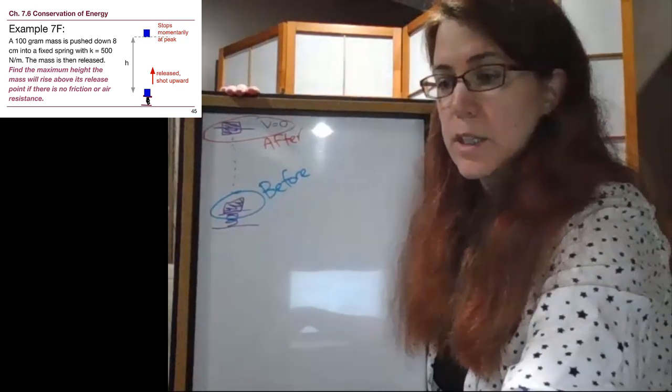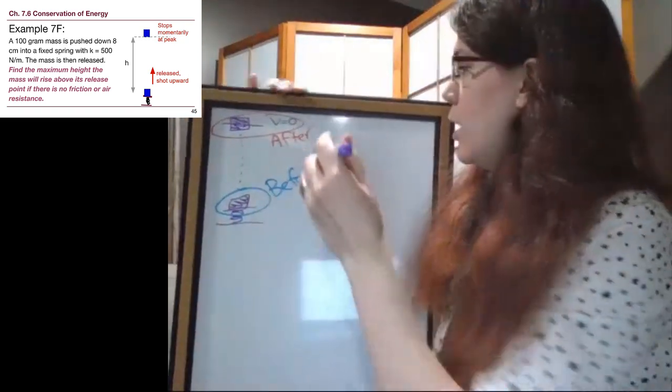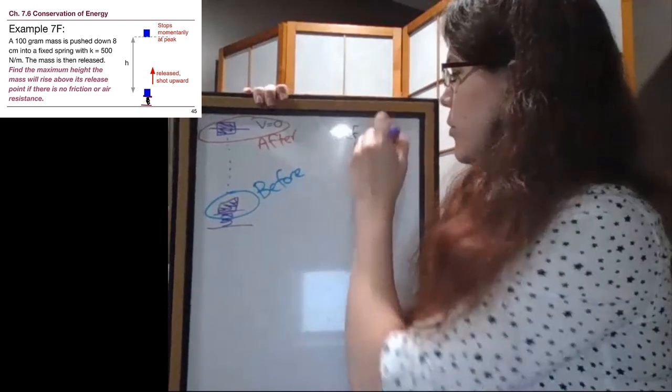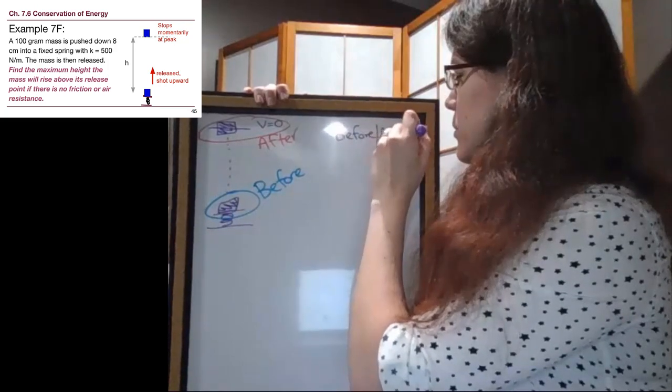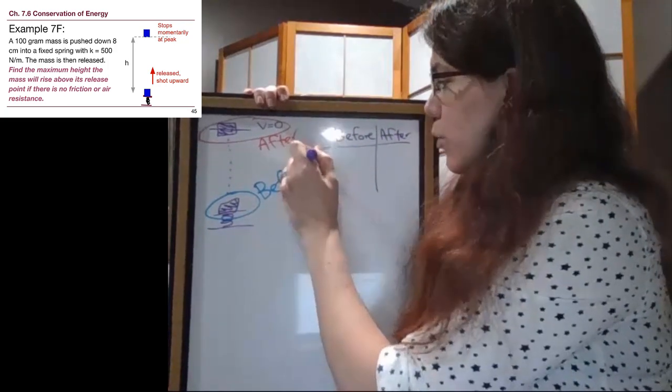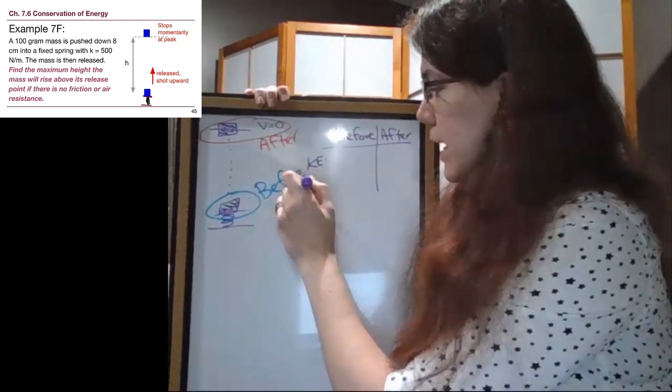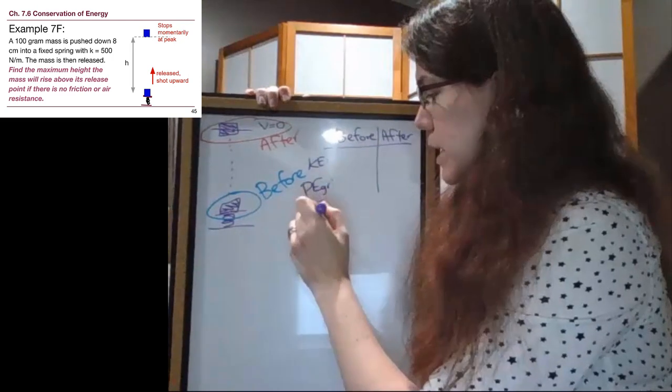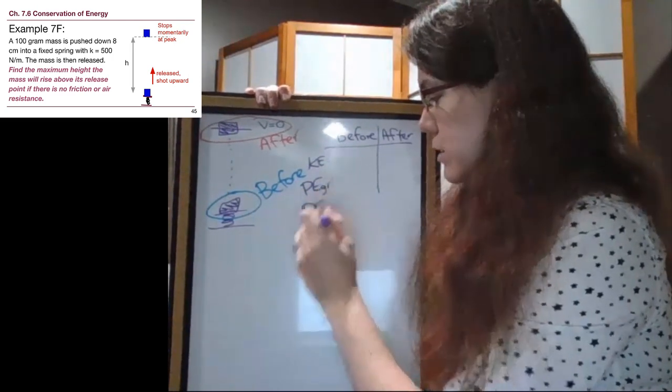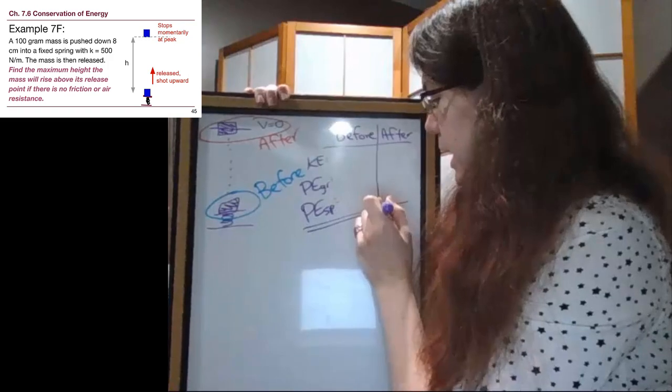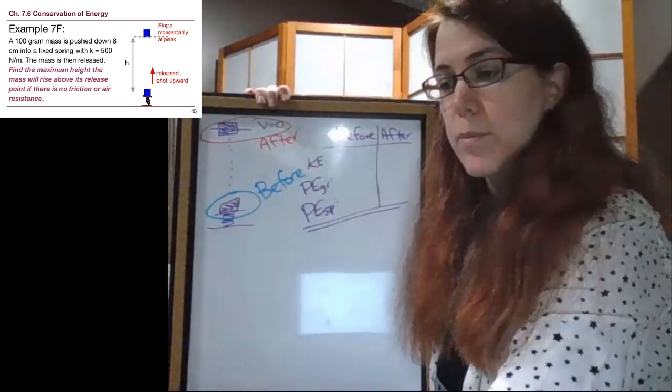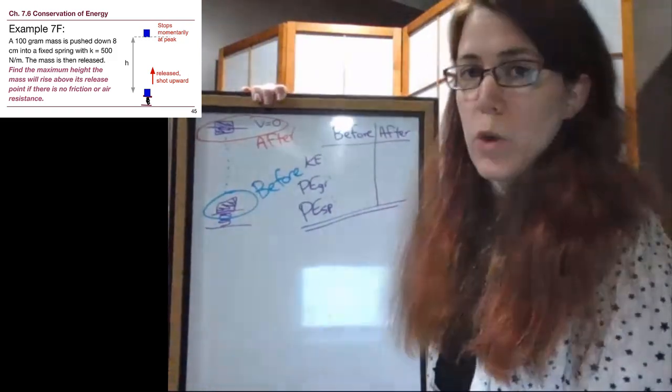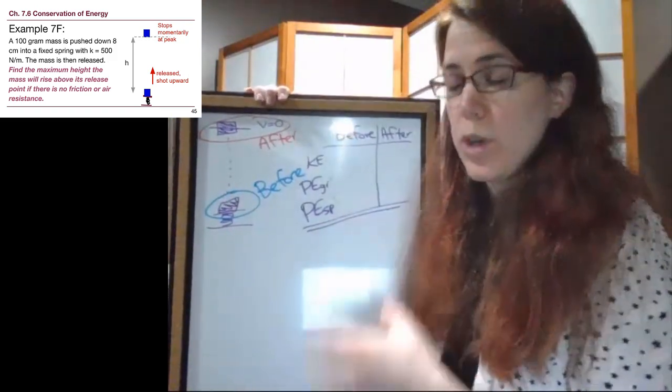And the question on our slide is asking us to find that maximum height. So just like with all of the other problems that we've done, we ask ourselves about before and after. We're going to ask about kinetic energy. We're going to ask about potential energy of gravity. And we're going to talk about potential energy of springs. Now, no different than any other idea in our setup, we are just going to ask a yes or no question to find out if we have that term or not.